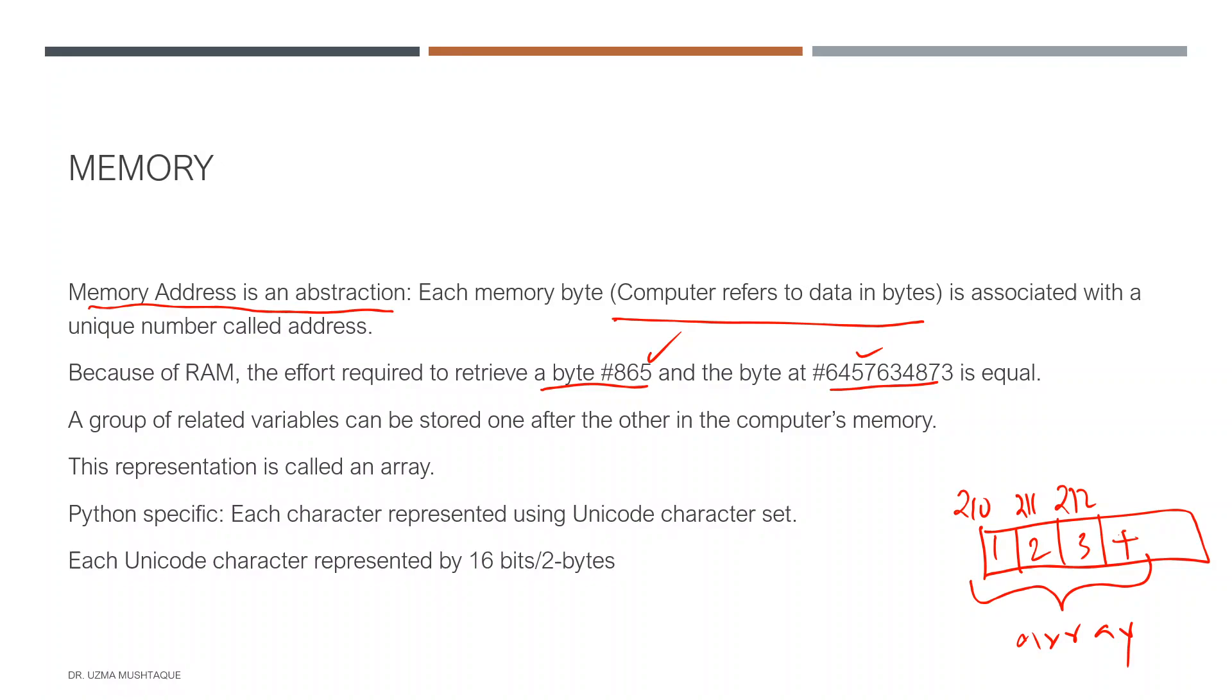Now, a little bit about Python-specific stuff. Python strings, for example, are an example of an array, like lists are. Each character is represented using the Unicode character set. Each Unicode character is represented by 16 bits or two bytes. This is how Python saves each element.